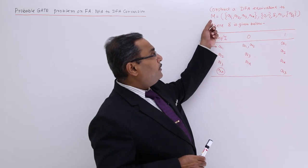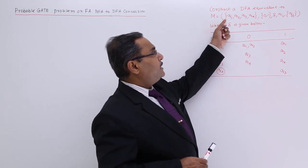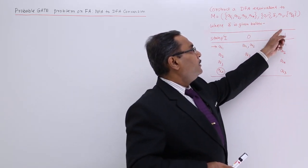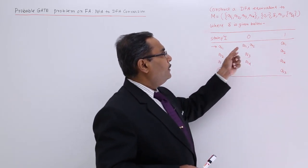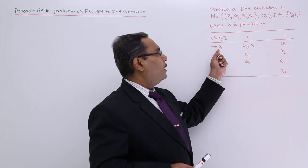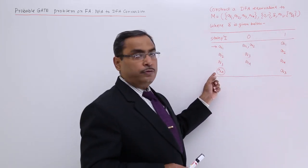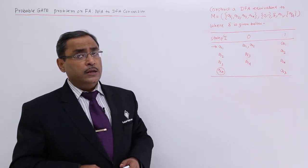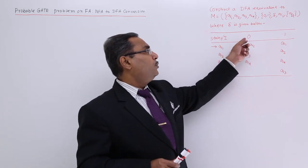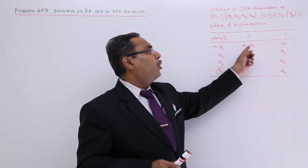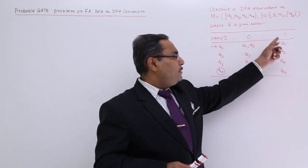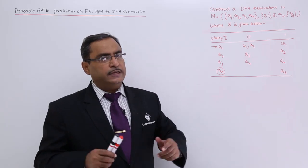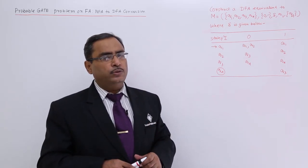Now one machine — a finite automata — has been given, which has 4 states and 2 input symbols: 0 and 1. This is my delta given in this particular table. q1 is the initial state and q4 is the final state. For state q1, if you put input 0, the next state will be q1 or q2. This indicates that this particular automata is non-deterministic. Let me convert it to the deterministic one.